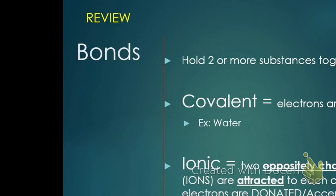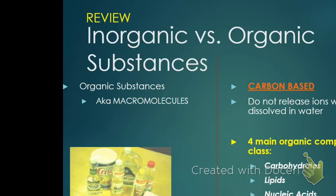So usually when you see ionic bonding, you'll see something like this: here's one atom, it's positive; here's another atom, it's negative. And then they fall in love because opposites attract. An example of that is table salt.